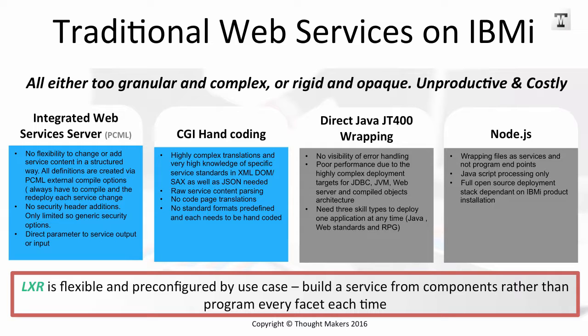Traditional web services on IBM i and other legacy mainframe application stacks are largely too granular and complex, right down in the bowels writing CGI code in Python or C. Or they're rigid and opaque where people have built very large, complicated middleware products like enterprise service buses. Some of those have been repurposed recently and remarketed as the solution for REST APIs, but essentially you're just putting another layer on and refacing it — which is what has always happened. They're usually very unproductive and often very costly.